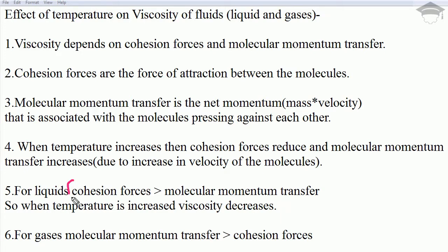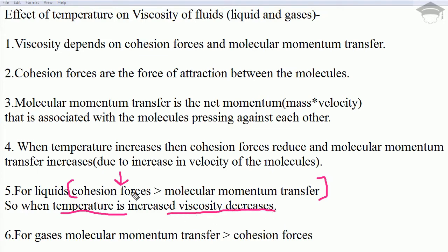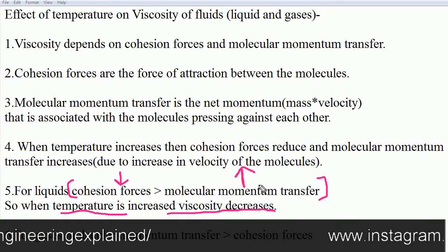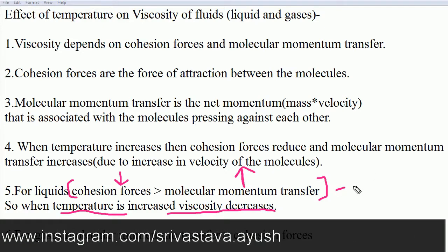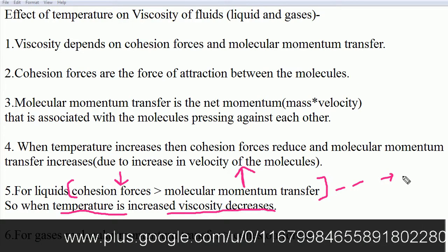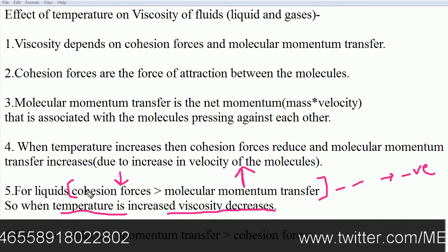For liquids, ideally the cohesion forces are greater than molecular momentum transfer — cohesion forces dominate. But when temperature increases, cohesion forces reduce and molecular momentum transfer increases. So the dominant force decreases and the lesser factor increases, giving a negative-negative situation overall.